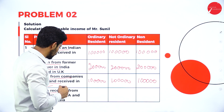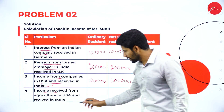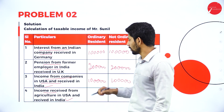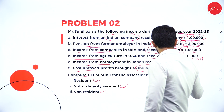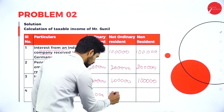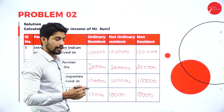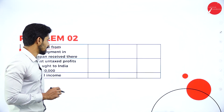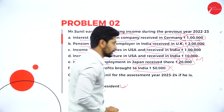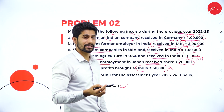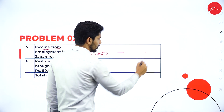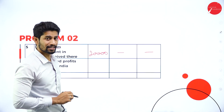Fourth point: income received from agriculture in USA, received in India. Again 'received in India' — taxable in all three columns. Amount is rupees 10,000 — write 10,000 in all three cases. Next: income from employment in Japan received there. Value is rupees 20,000. It is foreign other than business, so taxable, not taxable, not taxable — rupees 20,000, nil, nil.